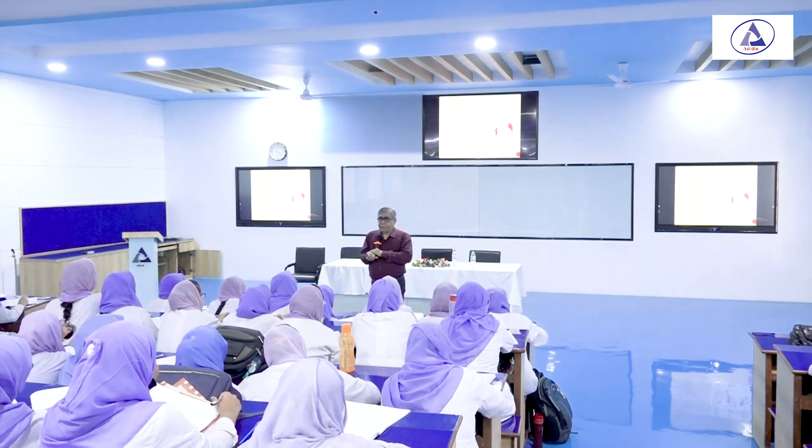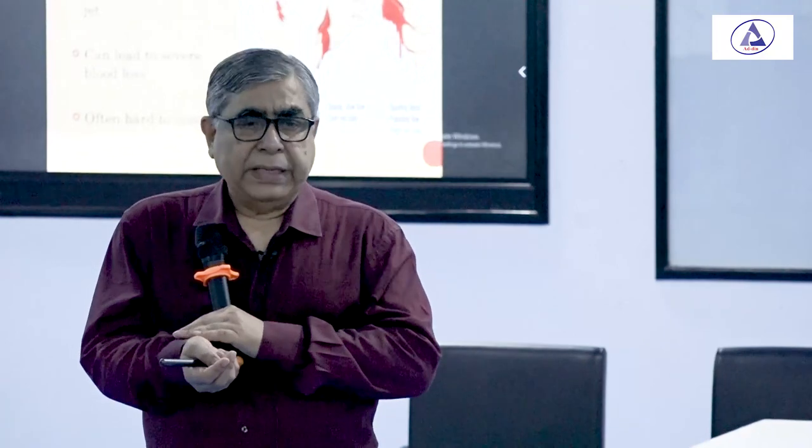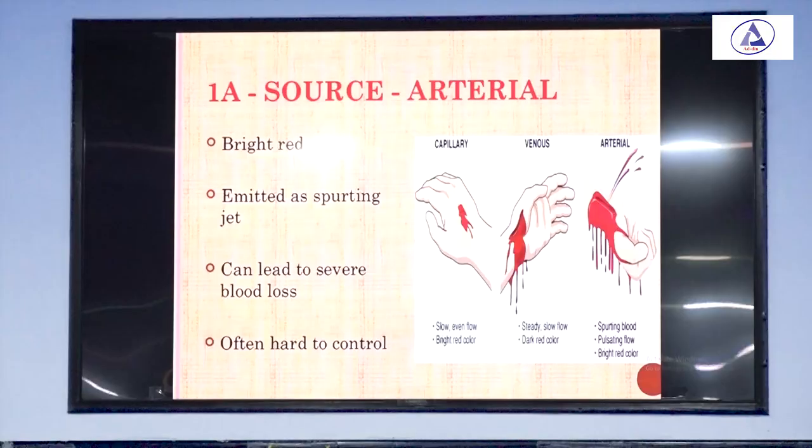Why do we say arterial bleeding is hard to control? Normally when bleeding occurs, we try to control it by applying pressure. But since the artery is a deep structure, deeper than the vein, adequate pressure cannot be exerted over the bleeding of a damaged artery. That is why it is hard to control. But a vein is always superficial, so when we apply pressure, the vein becomes squeezed and it may help to stop bleeding.